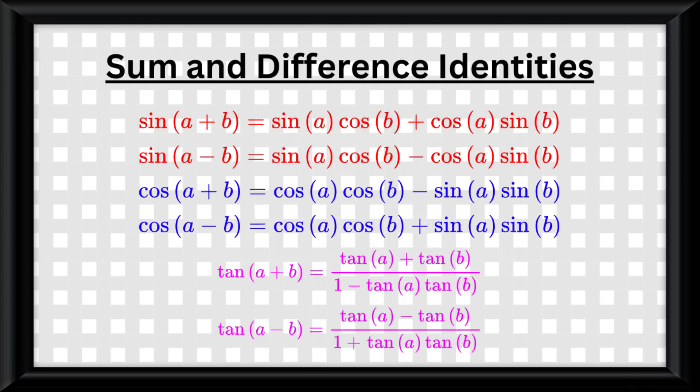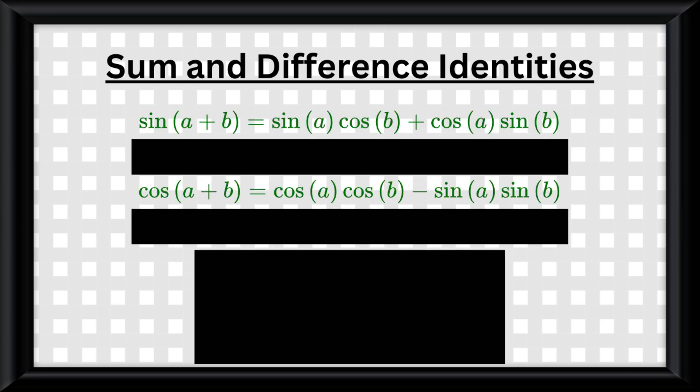But wait, there are more identities to talk about. My friends, we have something called sum and difference identities. There are also quite a bit of them. But for this course, you only need to know the sum identity for cosine and sine, and none of the other ones.